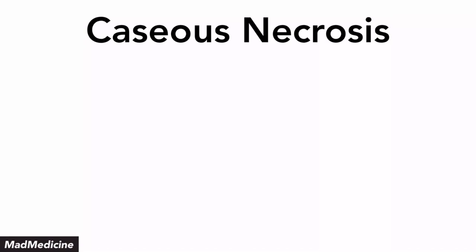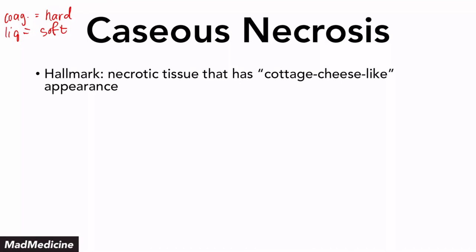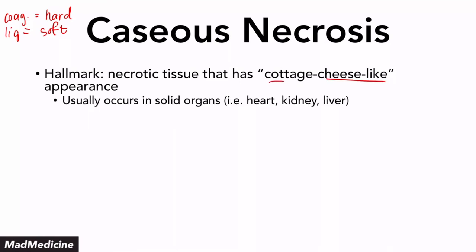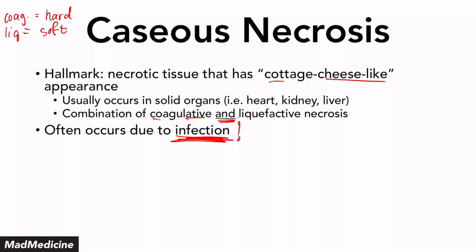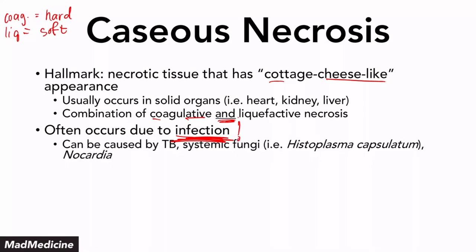Finally, we have caseous necrosis. Coagulative necrosis was hard, liquefactive necrosis was soft — caseous necrosis is necrotic tissue that has a cottage cheese-like appearance. It occurs in solid organs like the kidney, heart, and liver, but it's a combination of both coagulative and liquefactive necrosis. This is usually due to infection — very important. Several infections can cause this: TB, Histoplasma capsulatum, and Nocardia. Think about these organisms and just imagine cheese with them — that's how to remember it.